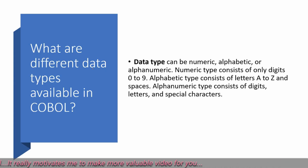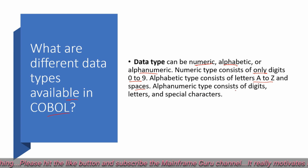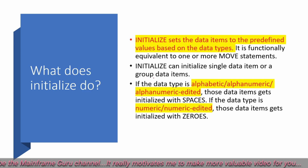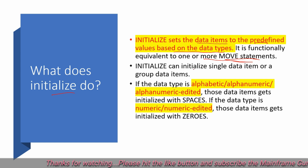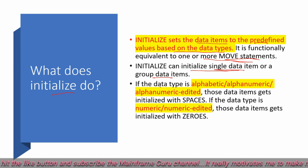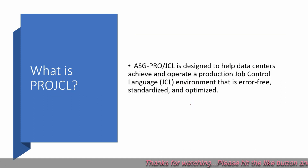What are the different data types available in COBOL? Data types can be numeric, alphabetic, or alphanumeric. Numeric type consists of only digits 0 to 9. Alphabetic type consists of letters A to Z and spaces. Alphanumeric type consists of digits, letters, and special characters. What does INITIALIZE do? It sets a data item to a predefined value based on its data type. Alphabetic, alphanumeric, or alphanumeric-edited items get initialized to spaces; numeric or numeric-edited items get initialized to zero.